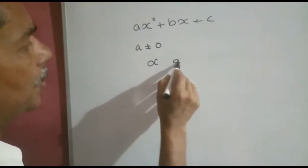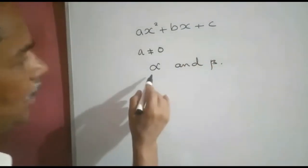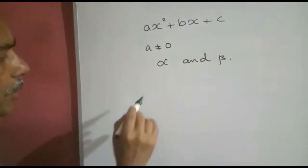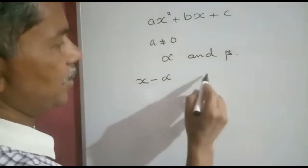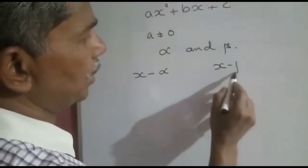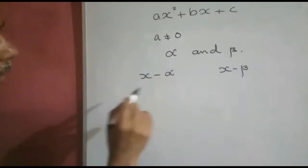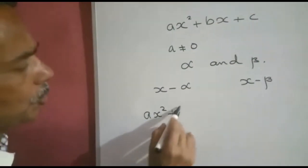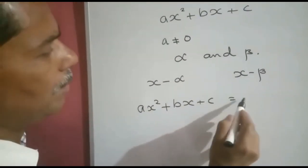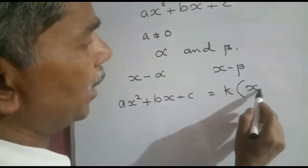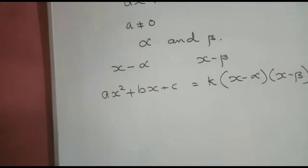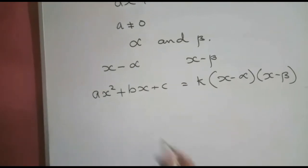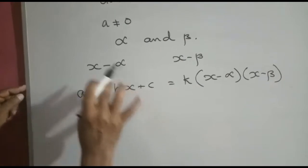Let the zeros of this quadratic polynomial be alpha and beta. If alpha is a zero of this quadratic polynomial in x, then by the factor theorem we can write x minus alpha as a factor. Also, x minus beta is also a factor. Thus, the given quadratic polynomial ax squared plus bx plus c can be written as a constant k into x minus alpha into x minus beta. Where k is a constant — k can take any value, and whatever may be the value of k, the zeros of the polynomial remain the same.